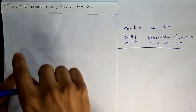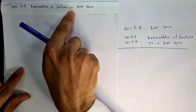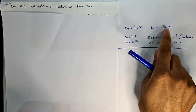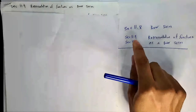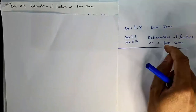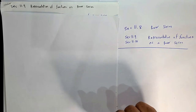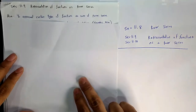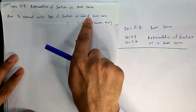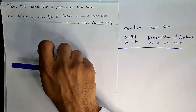Assalamu alaikum. Today we will talk about section 11.9, which is about representation of functions as power series. In the previous section, we talked about power series and tested them for convergence. Now in section 11.9, we will represent functions as power series — that means given a function, we find the corresponding power series. Our aim is to represent certain types of functions as sums of power series.